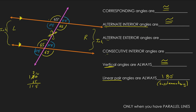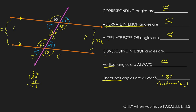Same thing for alternate exterior: this one matches with that one, and this one matches with that one — both pairs are congruent. Now, consecutive interior angles — also called same-side interior — refers to angles on the same side, both on the right or both on the left, between the two lines. These are not congruent, but if you add them together, they are supplementary — they add up to 180°.